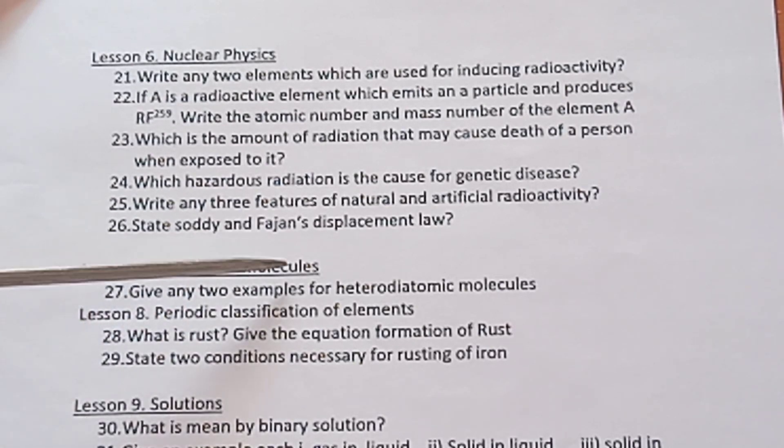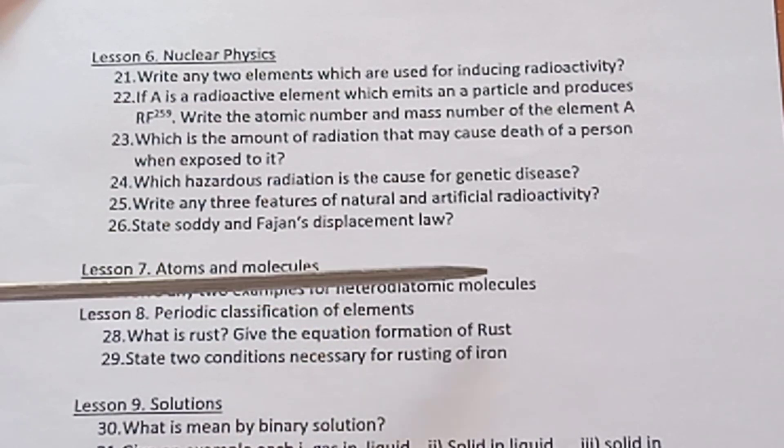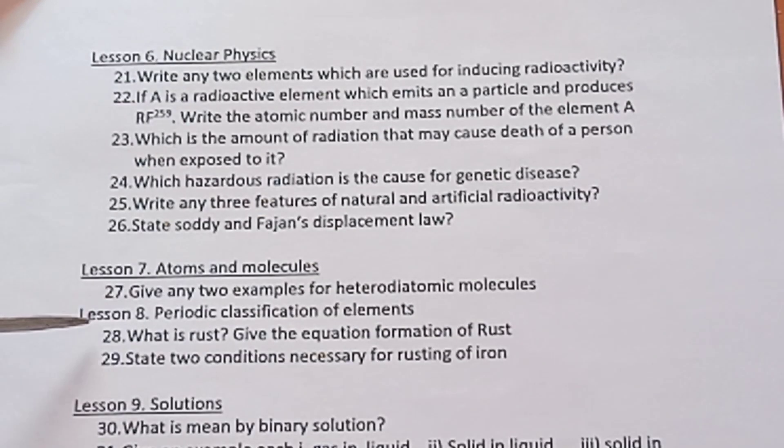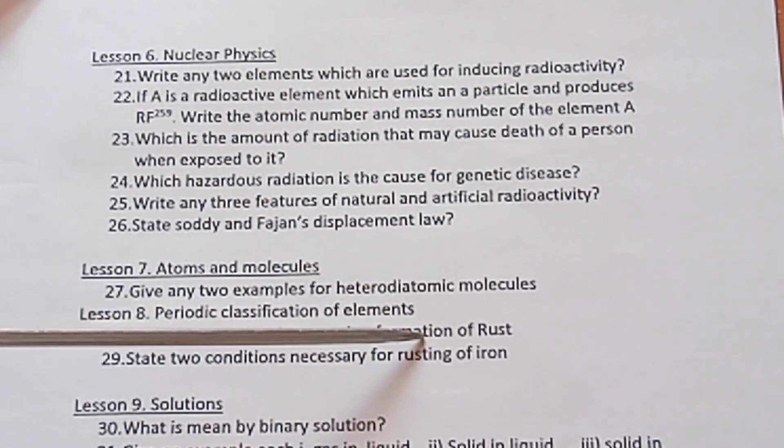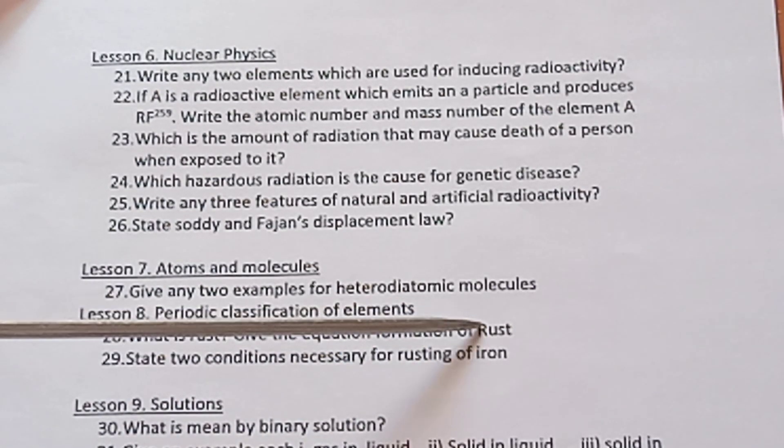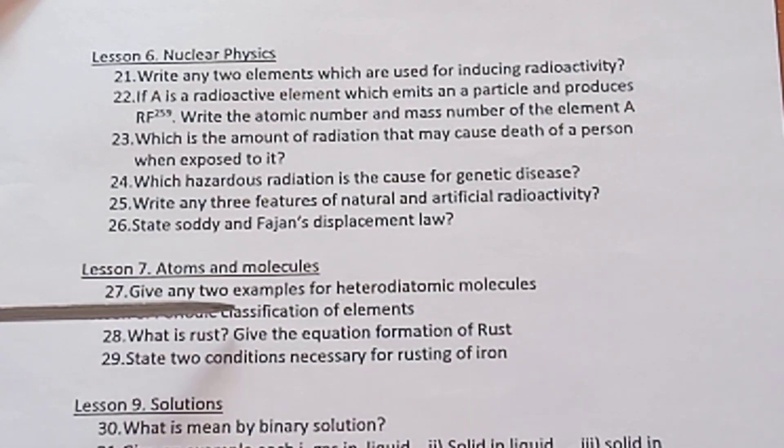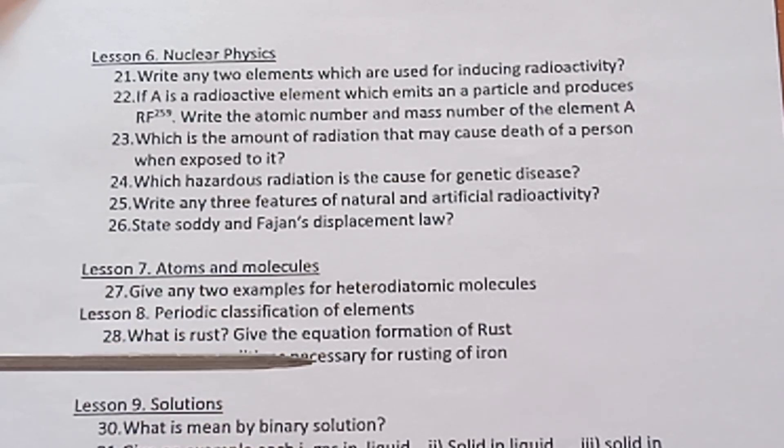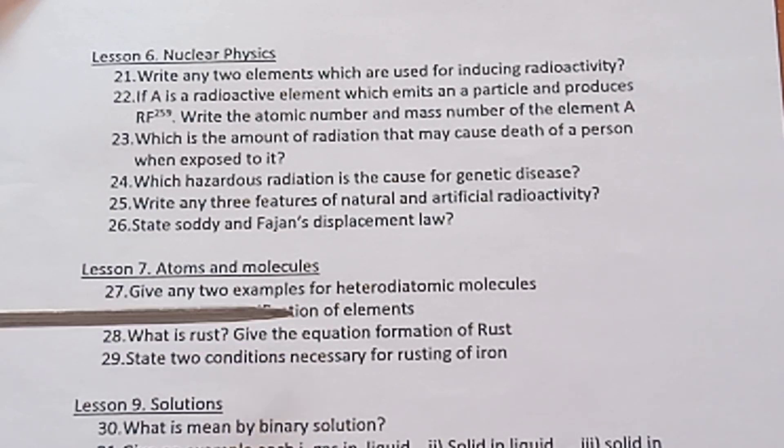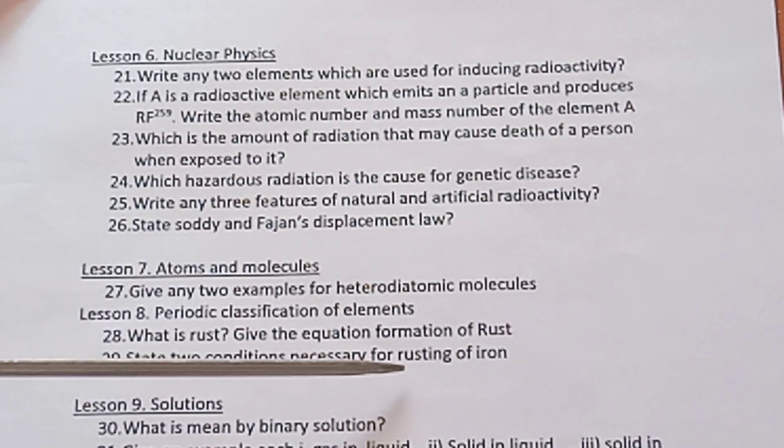Lesson 7 Atoms and Molecules. Give any two examples for heterodiatomic molecules. Lesson 8 Periodic Classification of Elements. What is rust? Give the equation for the formulation of rust. Formulation of rust, you have to write the equation. What is rust? You have to write the formula of rust: Fe2O3·X H2O. State two conditions necessary for rusting of iron.